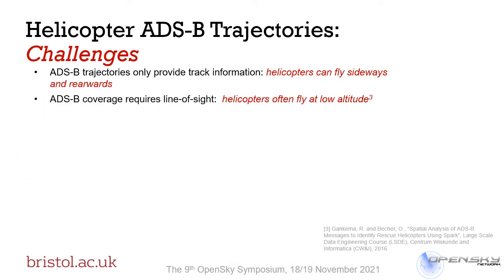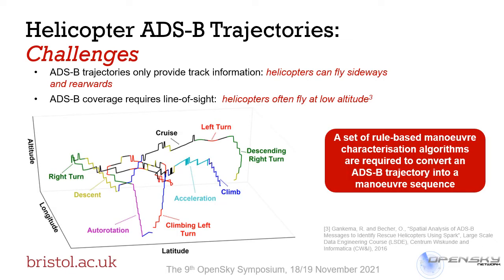There are of course some challenges in identifying helicopter manoeuvres within ADS-B trajectories. Firstly, ADS-B trajectories only provide track information and not the helicopter heading, so we need to find ways to identify sideways and rearwards flight with the limited data available. Also, ADS-B coverage requires line of sight and helicopters tend to operate at lower altitudes, so we may miss some key manoeuvres. We also need manoeuvre characterization algorithms to turn that 3D trajectory into a classified and labelled flight track showing the manoeuvres and when they occur — and that is the initial investigation we present today.